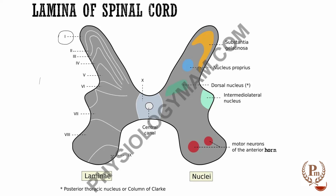What is important for us is lamina two — the major part of lamina two and a little bit of lamina three. This forms what we call the substantia gelatinosa. This lamina — the major part of the second lamina and a little of the third — forms the substantia gelatinosa. This is the area where pain fibers come and terminate. The sensory fibers terminate at the substantia gelatinosa, and from here the second-order neurons arise, cross over the spinal cord, and ascend up.